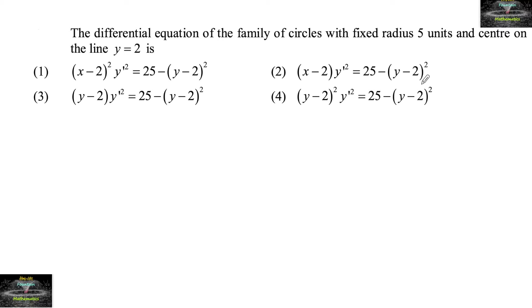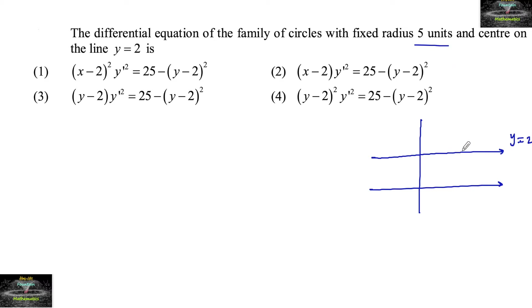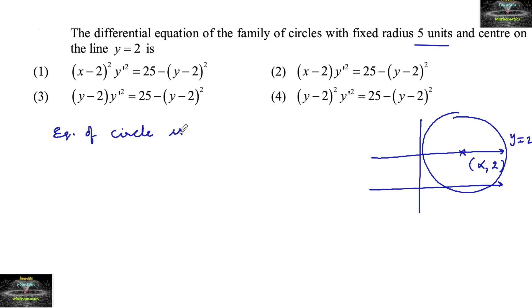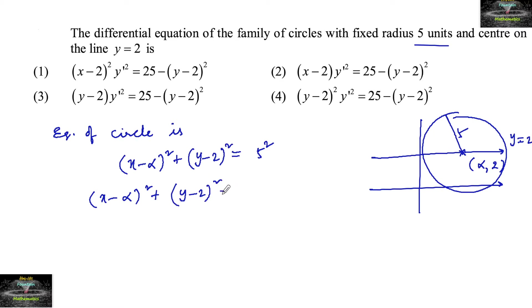The differential equation of the family of circles with fixed radius 5 units and center on the line y=2. Consider any point on the line y=2, say (α, 2). Having radius 5 units, we can take a circle, and the equation of the circle is: (x − α)² + (y − 2)² = 5² = 25. This represents a family of circles — call this equation (1).